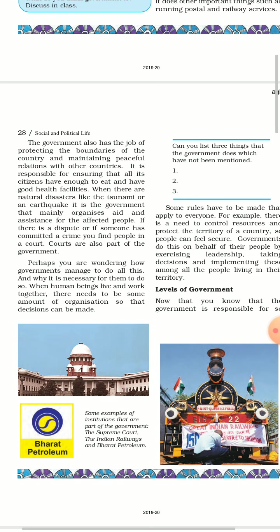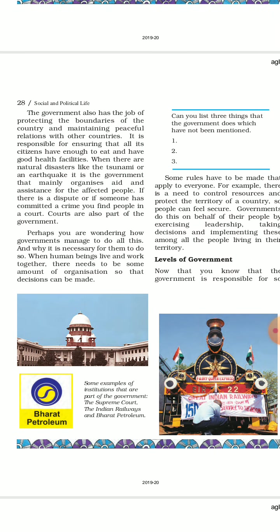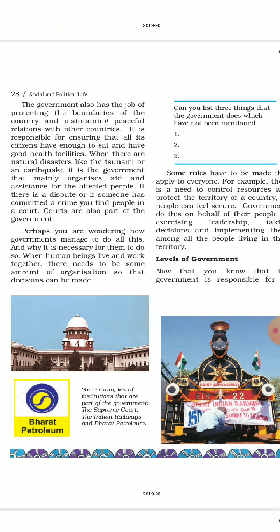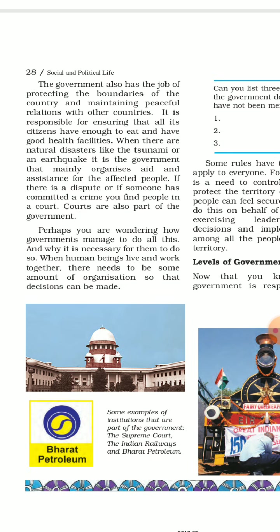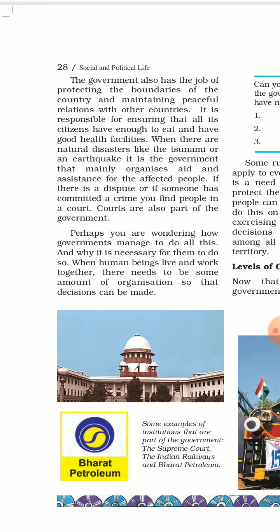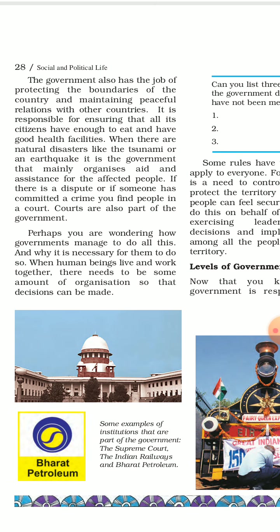The government takes action on many social issues, such as running several programs to help the poor. It also does other important things such as running postal and railway services. Government is also responsible for transport and health facilities for citizens, and it takes care of international boundaries and relations with other countries.